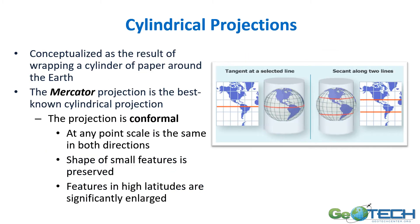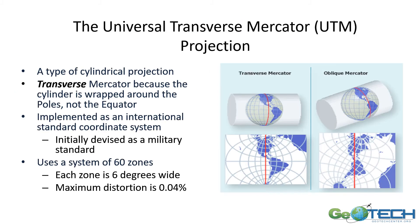For cylindrical projections, think about wrapping paper around the Earth as a cylinder. The Mercator projection is the best known cylinder projection, and it is conformable — at any point the scale is the same in both directions. Shapes of small features are not distorted, but areas at high latitudes are significantly enlarged. The Universal Transverse Mercator, often shown as UTM, is a type of cylinder projection where the cylinder is wrapped around the poles and not the equator. It's been implemented in international standards and was initially devised for military use. It uses a system of 60 zones, each 6 degrees wide, with very little distortion within each zone.